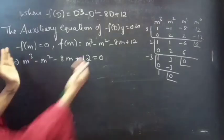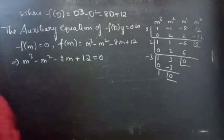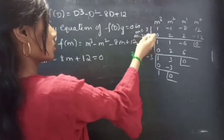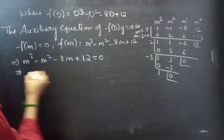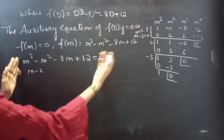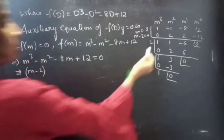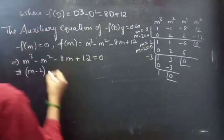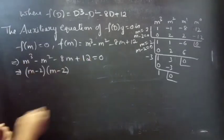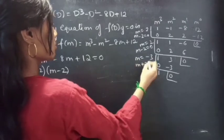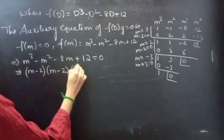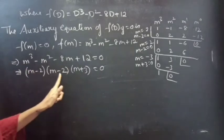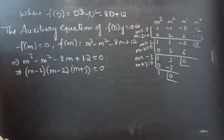Now we will write the factors of this polynomial. For m equals to 2 we get m minus 2 equals to 0, so m minus 2 is one factor. Here also we have m equals to 2, giving m minus 2 as another factor. And for m equals to minus 3 we get m plus 3 equals to 0, which is another factor. So we can write this polynomial as the product of m minus 2, m minus 2, and m plus 3.